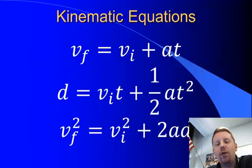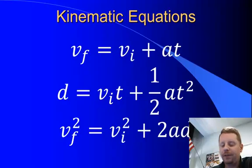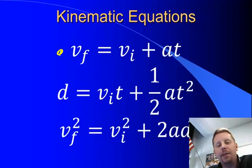The kinematic equations are three equations that relate these variables. We start off with number one: vf equals vi plus at. Final velocity equals initial velocity plus acceleration times time.